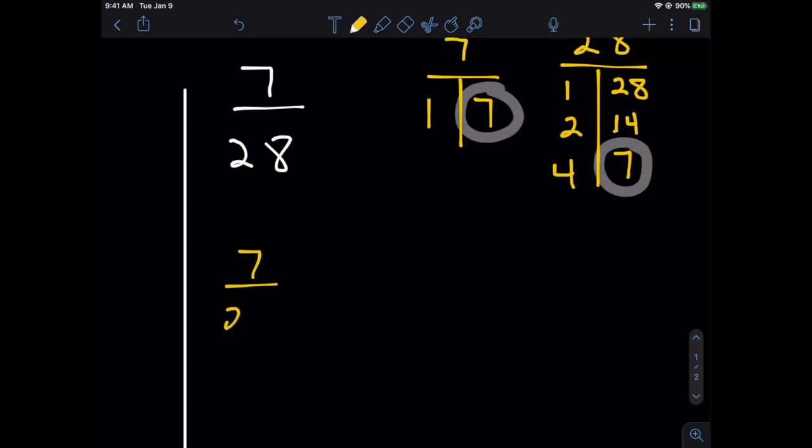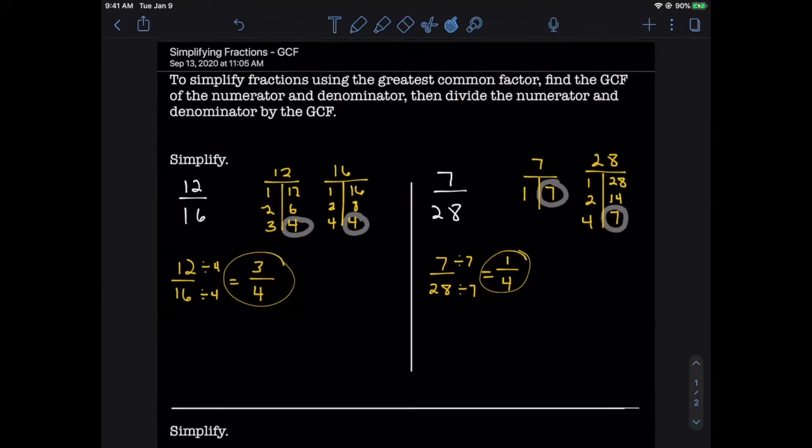I look and I see that the biggest number in both tables is equal to 7, so I'm going to divide my current numerator and denominators by that GCF to get my simplified fraction. 7 divided by 7 and 28 divided by 7 give us 1 and 4, respectively. So 7 twenty-eighths equals 1 fourth.